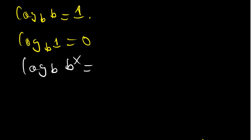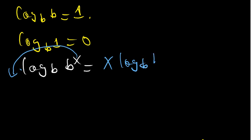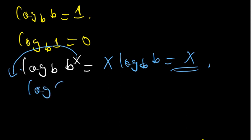Another rule we should know: if we have log base B of B^x, the property of log allows us to drop the power to be in front. So this is the same as x·log base B of B, and since log base B of B equals 1, this gives us x.